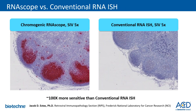Relative to conventional RNA-ISH methods, RNAscope is approximately 100 times more sensitive, as shown here in a direct comparison of RNAscope on the left versus conventional ISH using a digoxygenin labeling approach on the right — in this case, for detection of simian immunodeficiency virus in lymph node tissue.